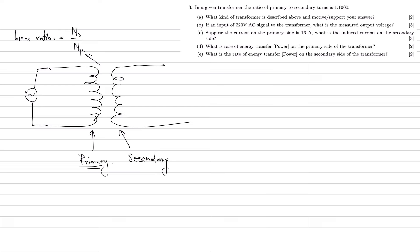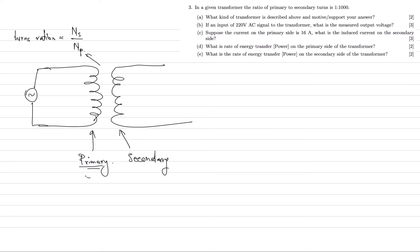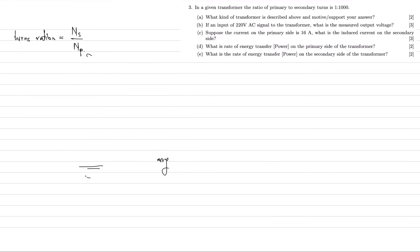In this particular example, we're told that the number of turns on the primary side is one for every thousand on the secondary side. It just means that the ratio — for every one winding on the primary side, there are a thousand on the secondary side. So this effectively tells us that the turns ratio for this particular transformer is going to be one thousand divided by one. It's important to note that this ratio is unitless — it has no units.